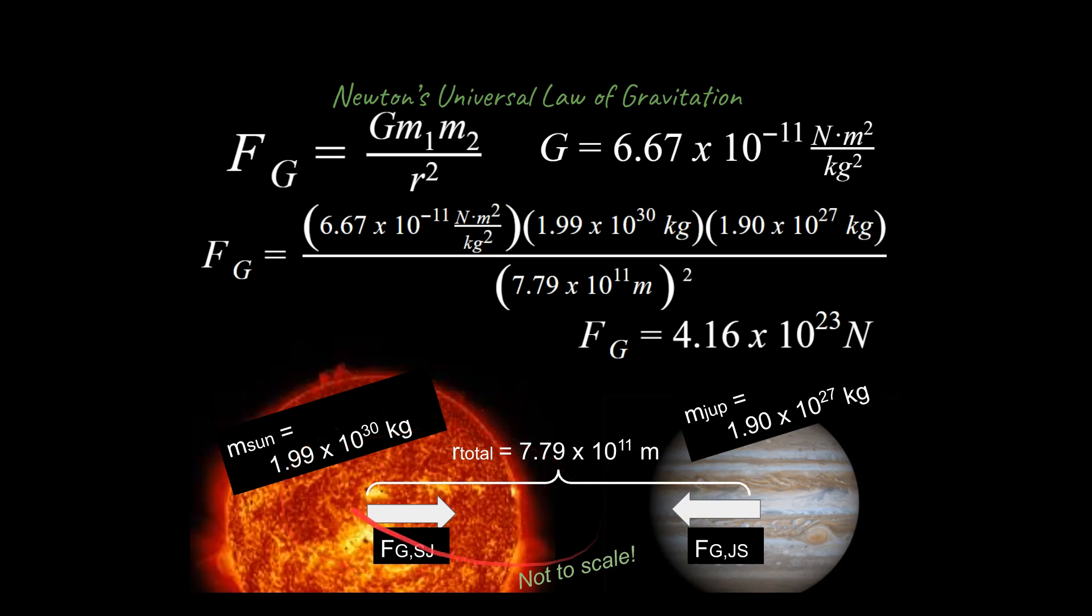And the reason why we tend to forget this, that forces come in pairs, is because usually we have a free body diagram of just one object, not a second free body diagram nearby of the other object. But it's true, forces come in pairs. So the attraction on the Sun by Jupiter is the same magnitude as the attraction on Jupiter from the Sun. And we solve for it with this equation up here.